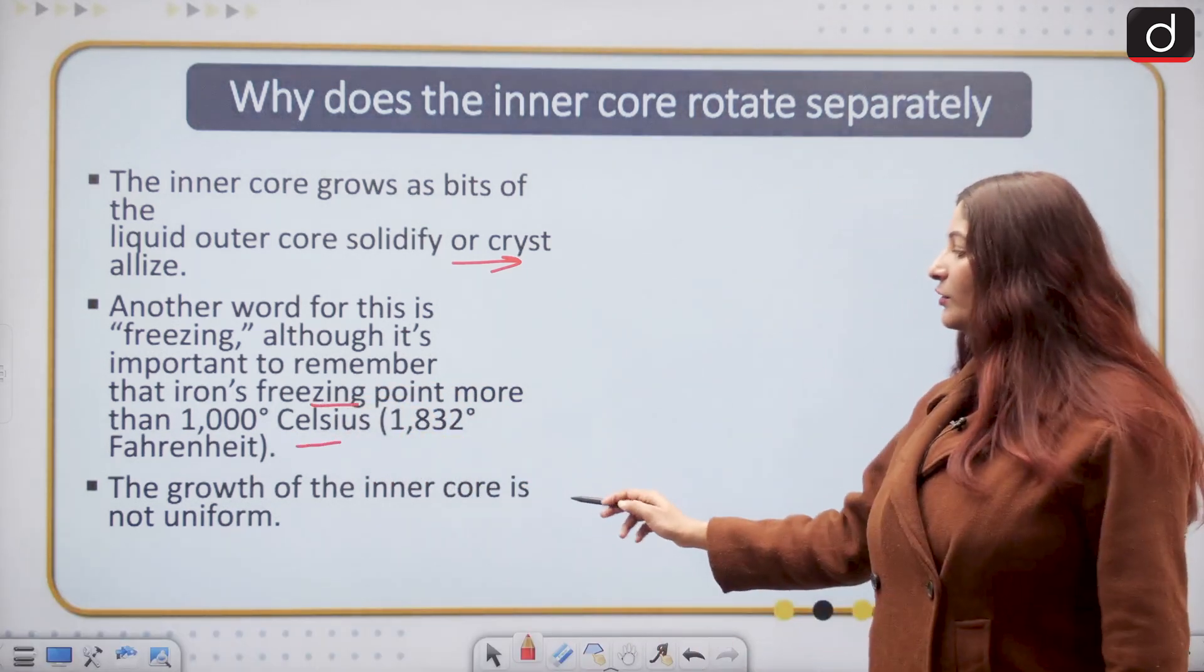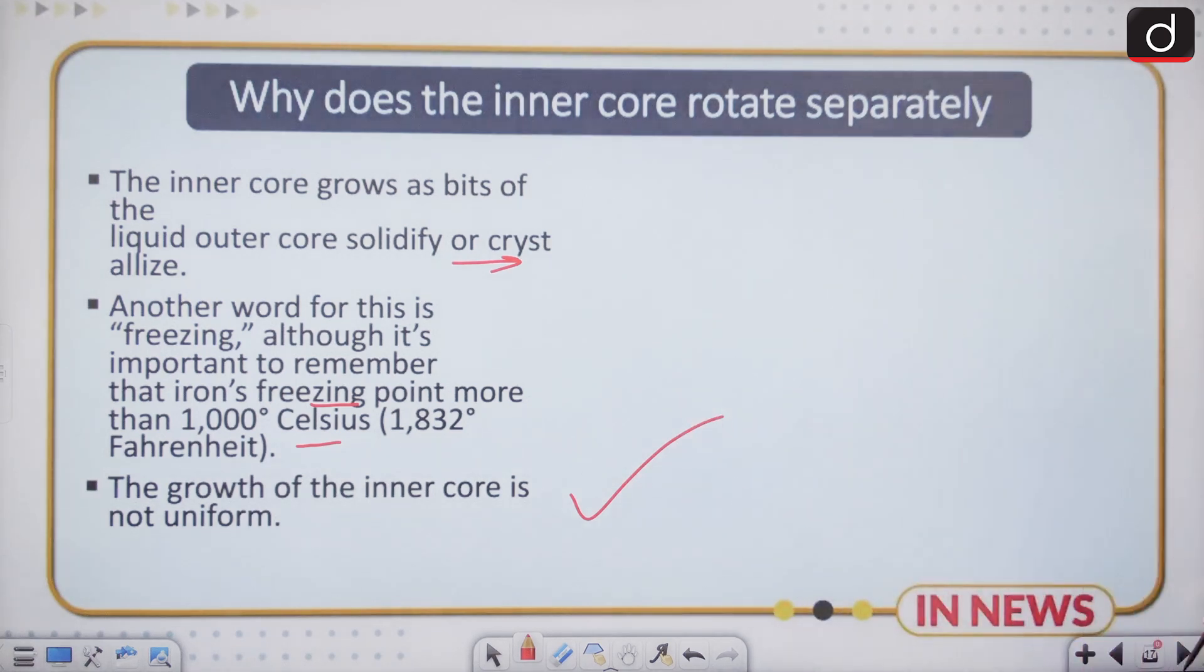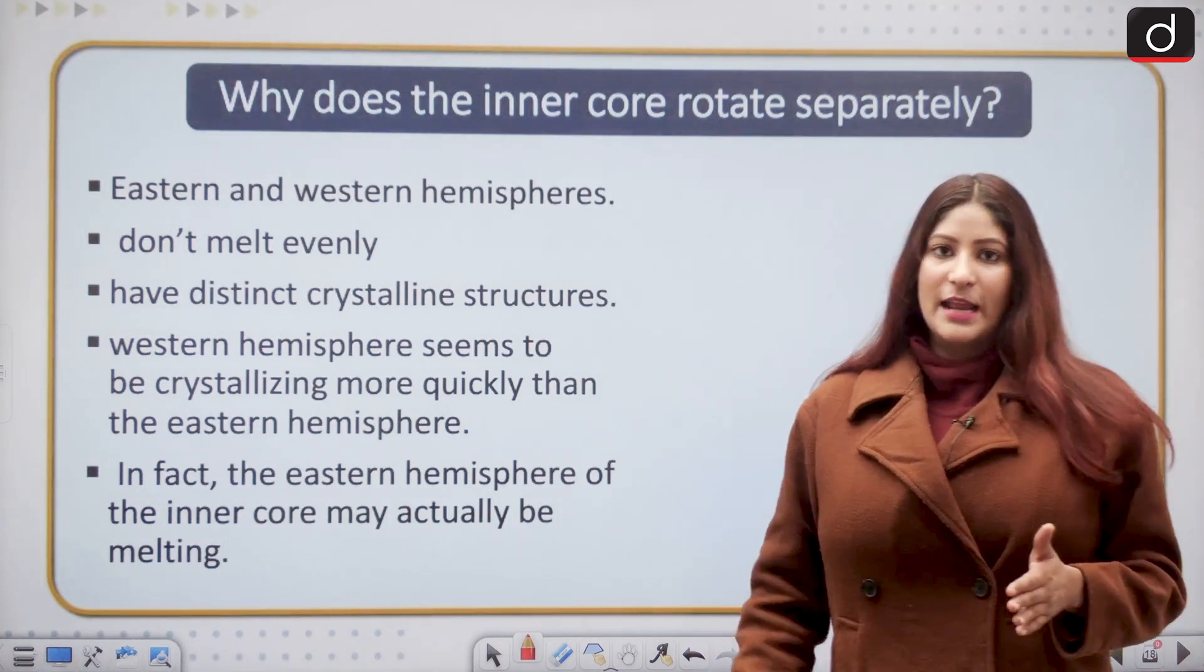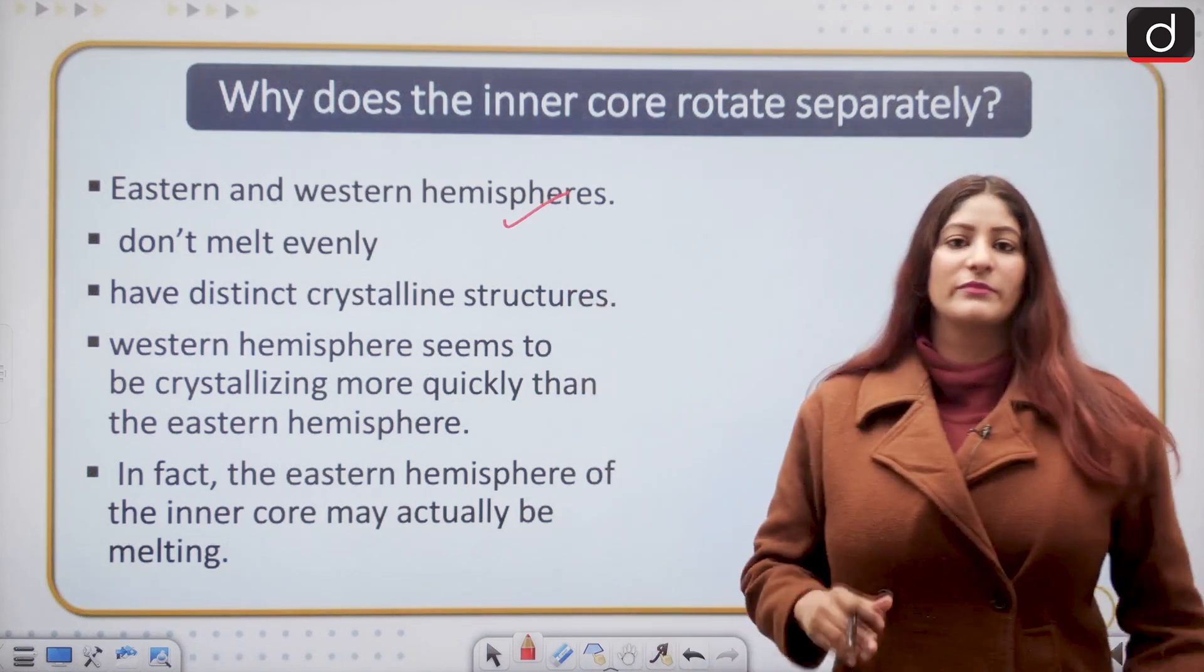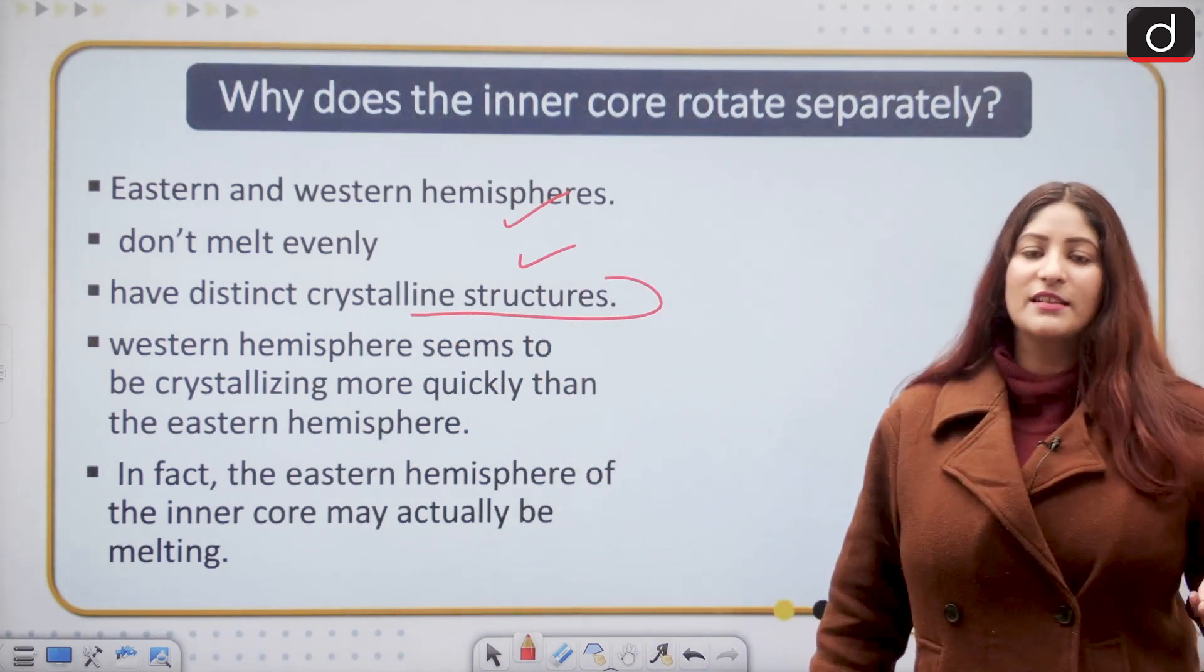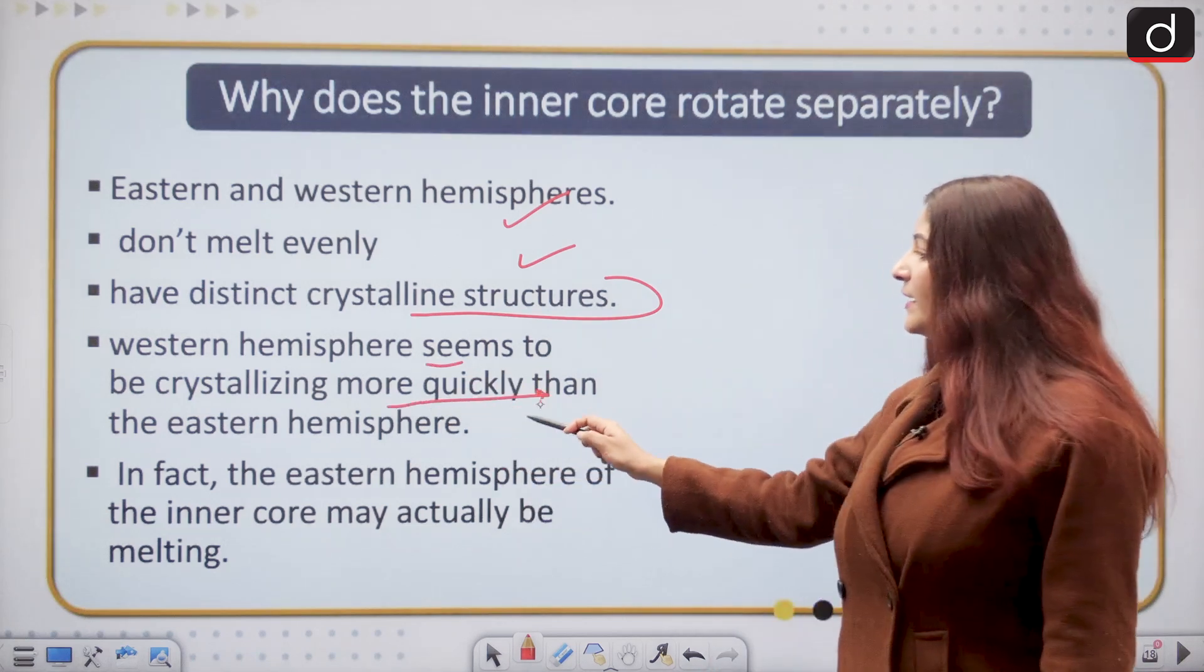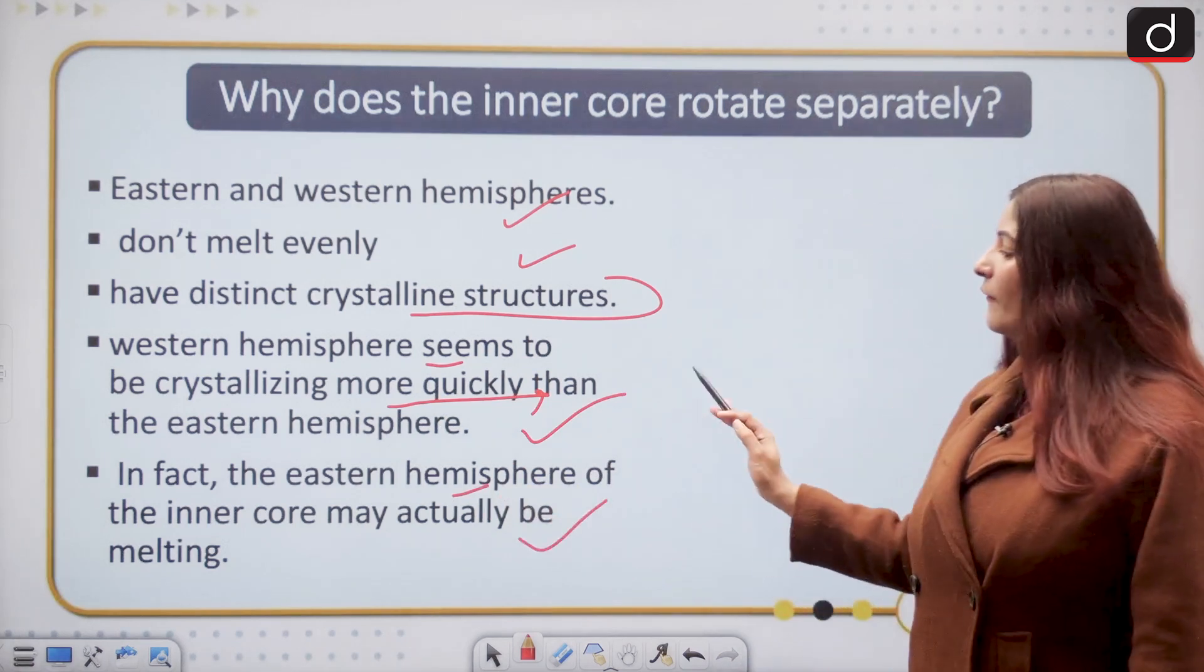The growth of the inner core is not uniform. The inner core is divided into two different hemispheres, the eastern and the western hemisphere, and they don't melt evenly. They have a distinct crystalline structure which is the reason for their differentiation and rotation. The western hemisphere seems to be crystallizing more quickly than the eastern hemisphere, and the eastern hemisphere may actually be melting.